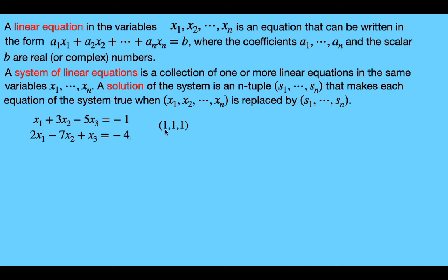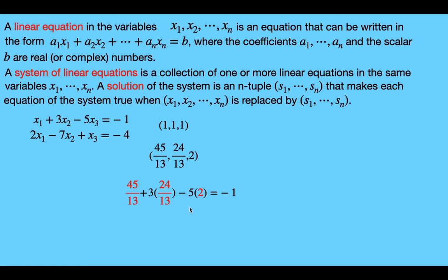So this list of three numbers — 1, 1, and 1 — is a solution of this system of linear equations. That's not the only solution, though. For example, this other 3-tuple is also a solution: if we plug it in for the first equation, we get 45/13 plus 3 times 24/13 minus 5 times 2.